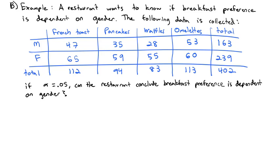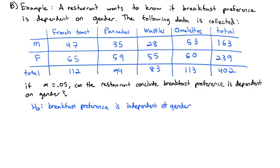Let's set up our hypothesis test. The null hypothesis states that breakfast preference is independent of gender — breakfast preference does not change based on whether you're male or female. The alternative hypothesis is that there is some type of dependence — that breakfast preference is dependent on gender.